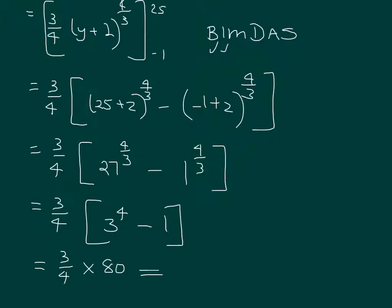So simplifying that, it's 3 quarters times, now 3 to the 4th is 81, minus 1 is 80. Which you can do that in your head: 4 into 80 goes 20 times, 20 times 3 is 60. So it's 60 units squared.